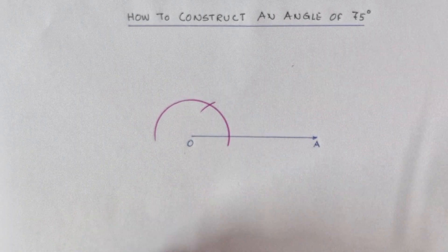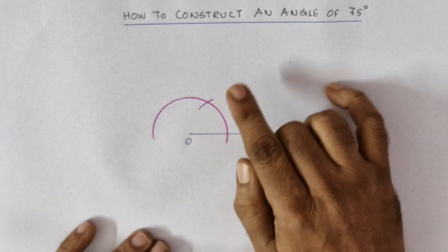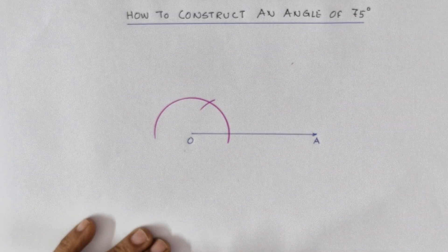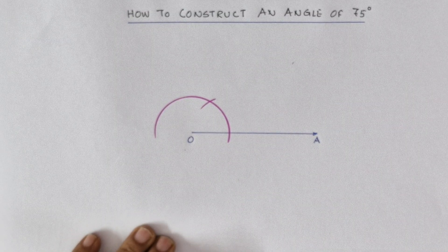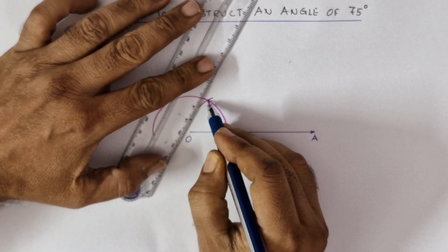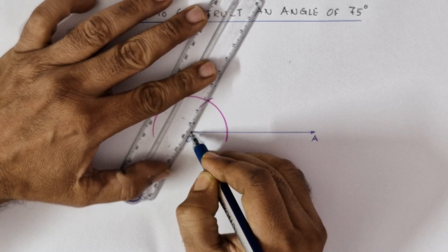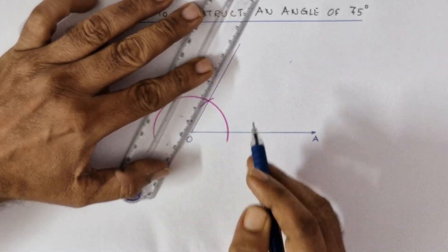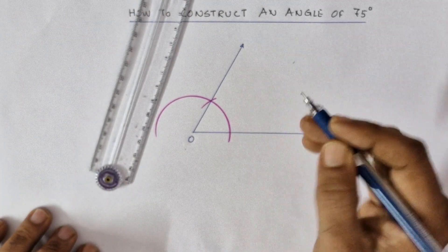What you are having here: if you join O and this intersection point you will get 60 degrees. Let's join it. Point the intersection point correctly, take the point vertex O and join it. Let us name it as B.